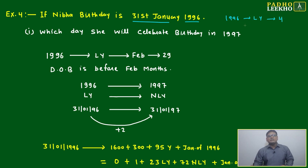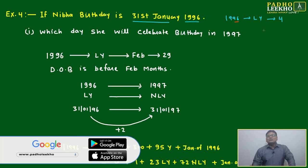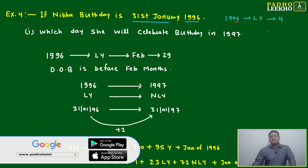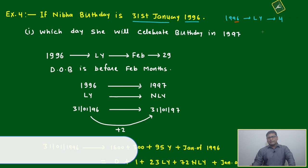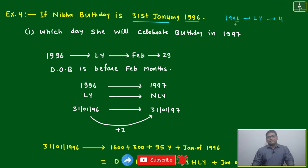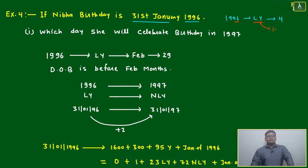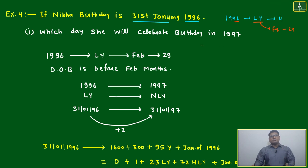To check if it's a leap year, we use the divisibility rule: the last two digits must be divisible by 4. Here the last two digits are 96, and 96 = 24 × 4, so it is divisible by 4. Therefore 1996 is a leap year, meaning February has 29 days.